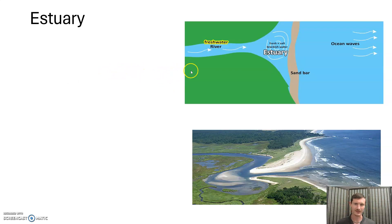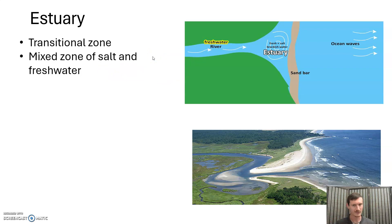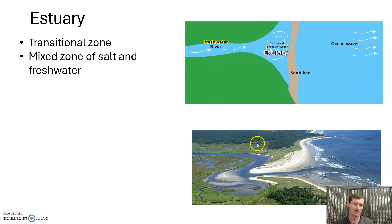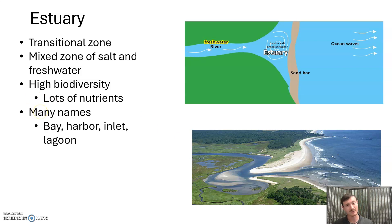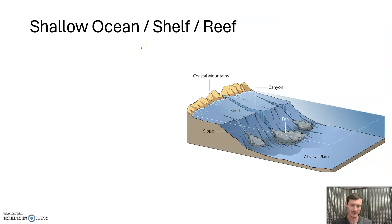An estuary is going to be at the intersection of fresh water coming in through a river and salt water in the ocean. That combination of kind of fresh and kind of salt water is called brackish water — that's a good term to know. Estuaries are great for bird life and have lots of biodiversity, with tons of nutrients coming in from both sides — it's kind of a meeting place of all the worlds. Bays, harbors, inlets, and lagoons all fall into this category.